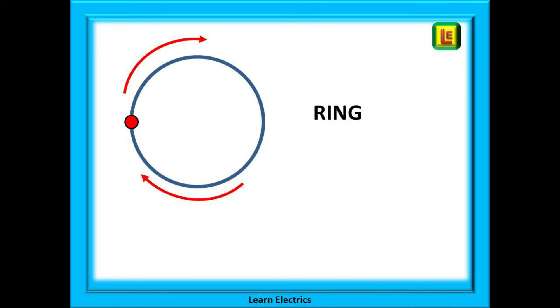Keeping it very simple then, a ring circuit means that the cables are installed as a ring. They will leave the consumer unit, visit all the points of use for that circuit and then return to the consumer unit, and we will tell you why very shortly.